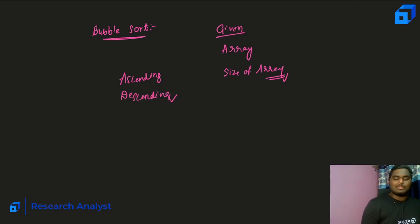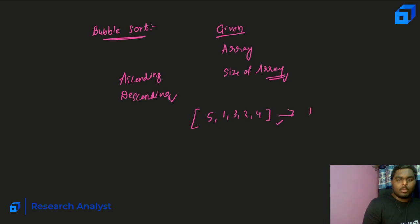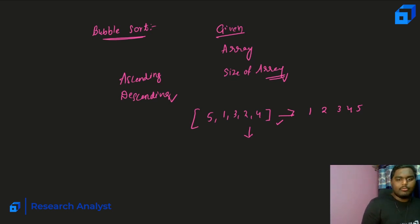What is ascending and descending? Let's say you have an array like: 5, 1, 3, 2, 1. If you want to sort this in increasing order, it would become 1, 2, 3, 4, 5. If you are asked to sort it in decreasing order, it would become 5, 4, 3, 2, 1.